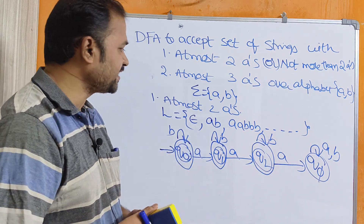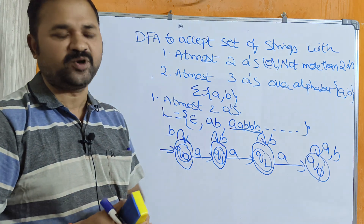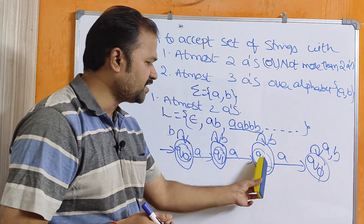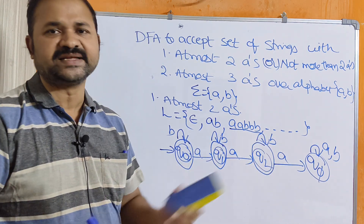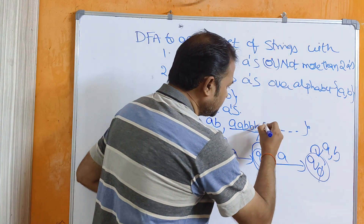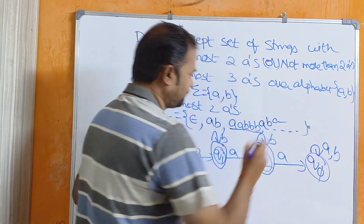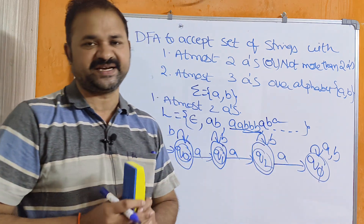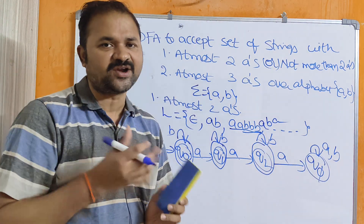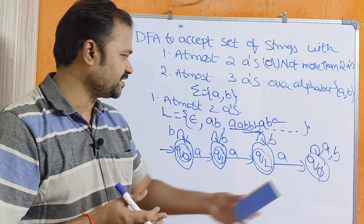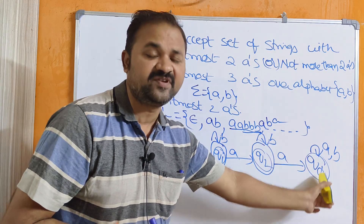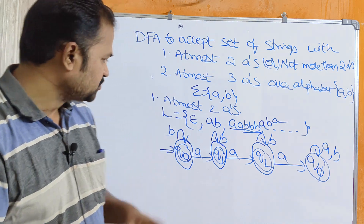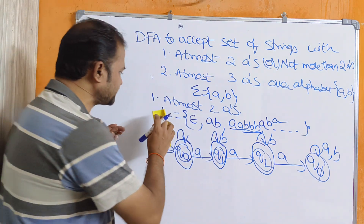Let us verify the diagram with an input string. Take the string AABBB: Q0 on A goes to Q1, Q1 on A goes to Q2, and with 3 B's on Q2 we stay at Q2 — which is a final state. Next, consider the string AABBA: after reading AABBB we are at Q2, and if we read one more A on Q2, we go to Q-pi — a dead state. That means we have 3 A's, which are not accepted. On Q-pi, any further A's or B's keep us in dead state. This is the complete DFA for at most 2 A's.